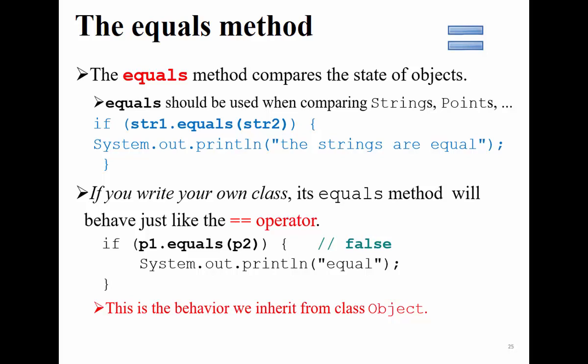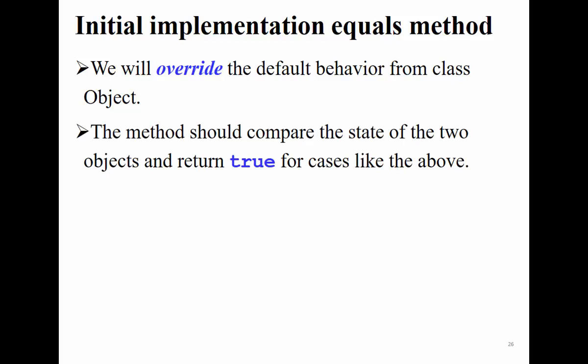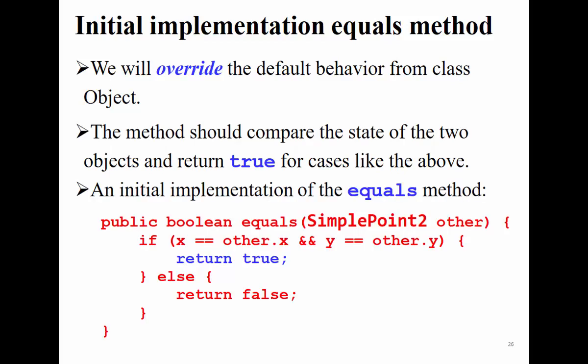How can we implement the equals method? We override it. Remember, equals receives an Object type. Someone might implement: `public boolean equals(SimplePoint2 other)` — if x == other.x and y == other.y, return true, else return false. We can use `==` here because x and y are primitive int types. However, this initial implementation is not fully correct, because the equals method signature must accept any Object type, not just SimplePoint2.